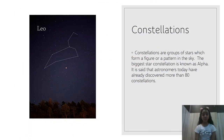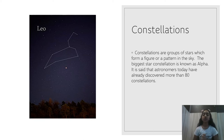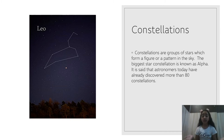Our next heavenly body are constellations. Constellations are groups of stars which form a figure or a pattern in the sky, like this picture. The biggest star constellation known is called Alpha. It is said that astronomers today have already discovered more than 80 constellations — that is actually a lot.